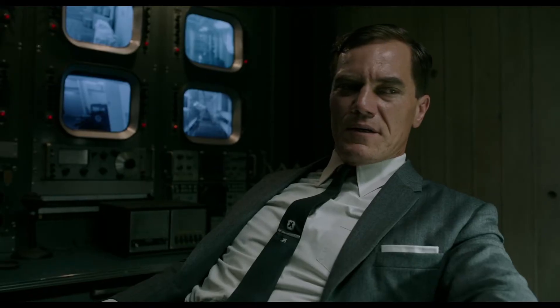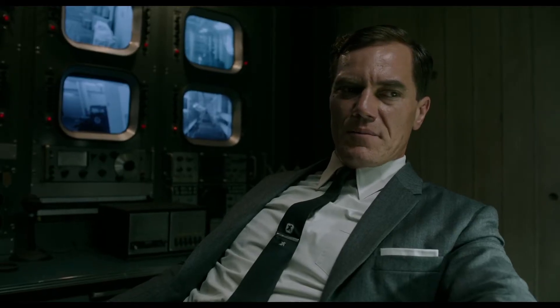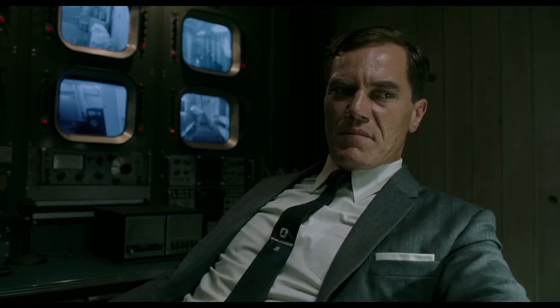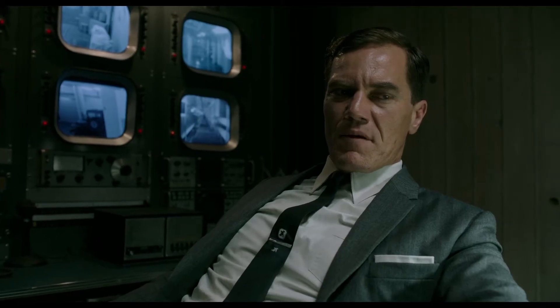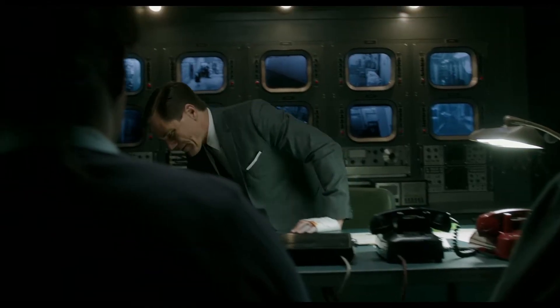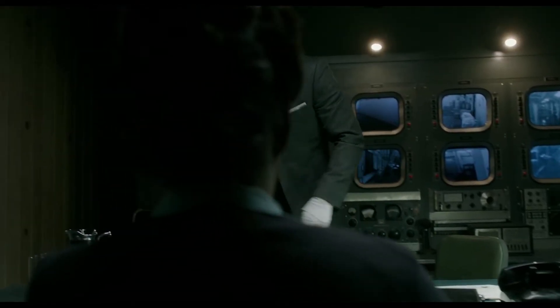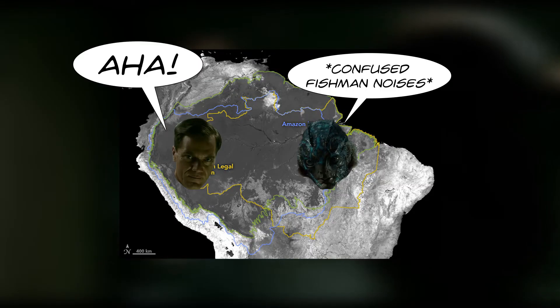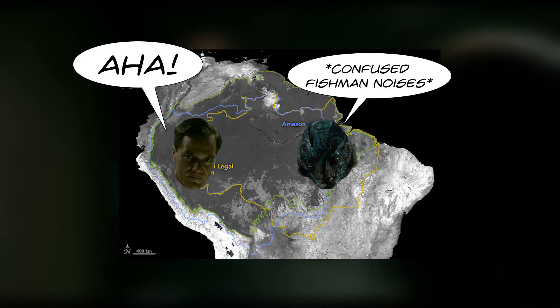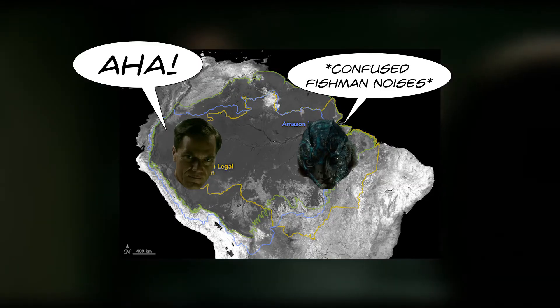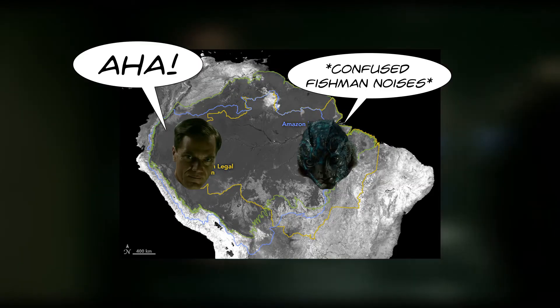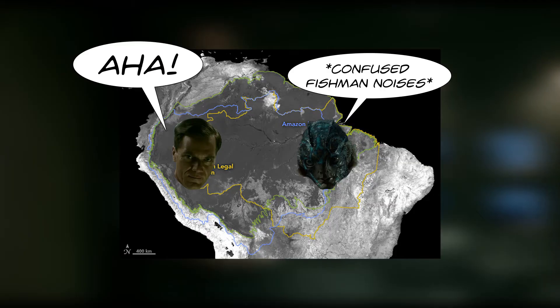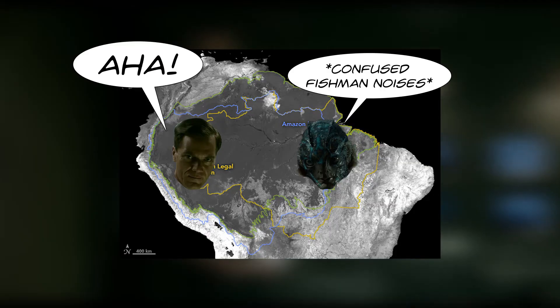I know some of you right now are probably like, no wait — the fish-man has to be from the Amazon River. Strickland said he dragged him from river muck, which yes — Strickland may have found the fish-man in the Amazon, but there's no way he could have lived there because of clue number two.